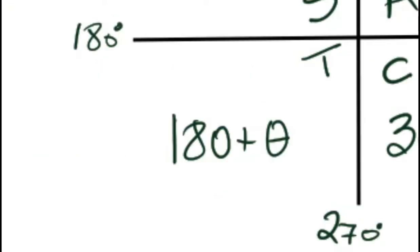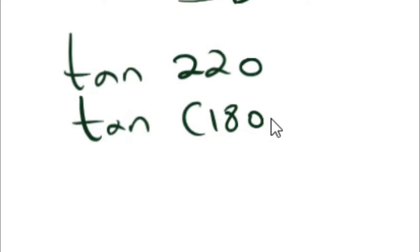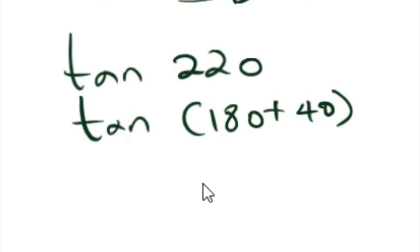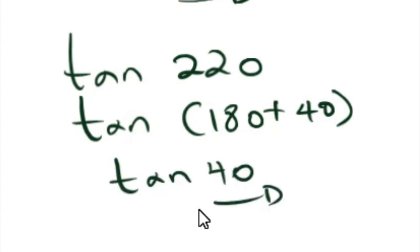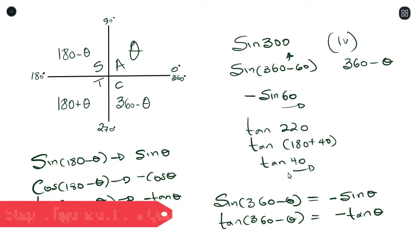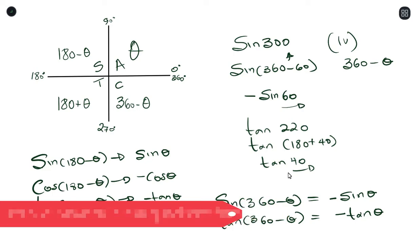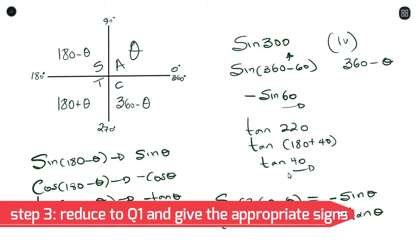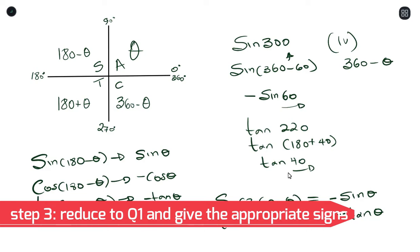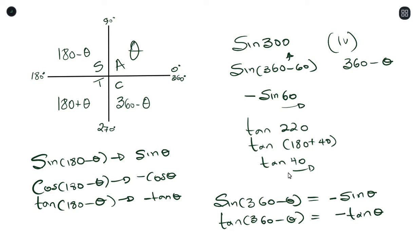Let's try one more example: tan 220. Now 220 falls in the third quadrant because it falls between 180 and 270. We rewrite 220 into the equation of the third quadrant. Since tan is positive in the third quadrant, the result is positive tan 40. So the concept of reduction has three steps: first, determine which quadrant the value is in; second, rewrite the value into the equation of that quadrant; third, assign a sign — positive or negative — and bring it back to the first quadrant.